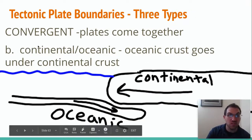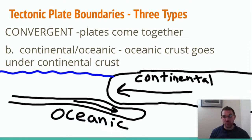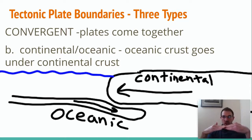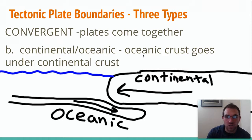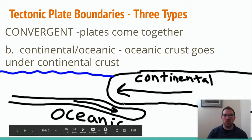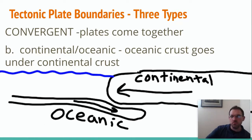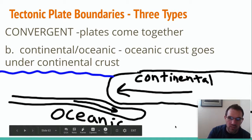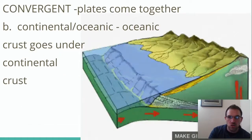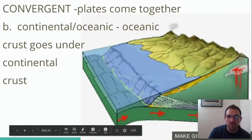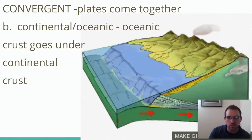The second type of convergent boundary is when continental crust meets oceanic crust. We have two plates coming together, but when the thicker continental crust meets the thinner but denser oceanic crust, the oceanic crust sinks underneath because it's denser. This is subduction taking place. I'd like you to draw this diagram — include blue for the water and label the two types of crust. The oceanic crust is subducting underneath the continental crust.